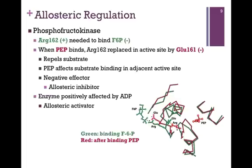Phosphoenolpyruvate affects the substrate binding in an adjacent active site, and since it's a negative effector, it's an allosteric inhibitor. In the case of PFK — phosphofructokinase — it is actually allosterically activated by another metabolite, adenosine diphosphate, or ADP. It is a very highly regulated enzyme.